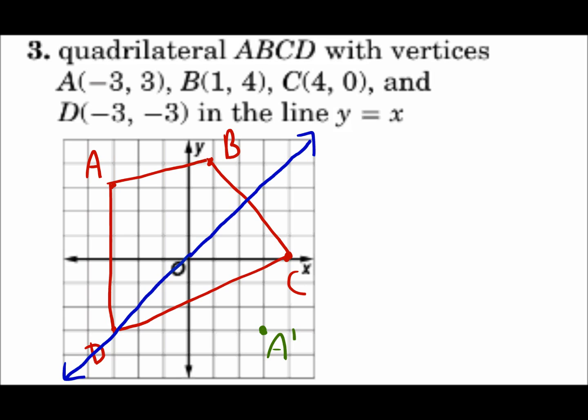And that will be A prime. When you draw the image, the corresponding point for A is A prime. B, draw perpendicular to the line. It's one and a half diagonals. We will go one and a half more over to here. And that's B prime.